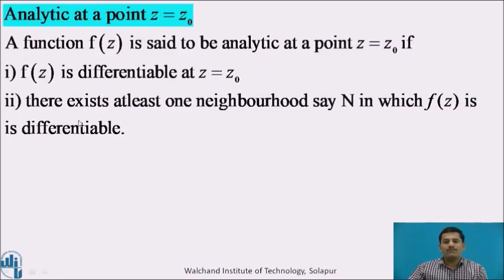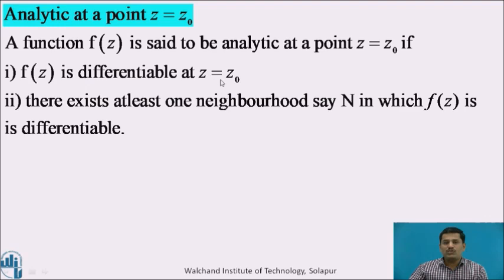Next, the definition of an analytic function. First, analytic at a point: a function f of z is said to be analytic at a point z equal to z0 if it satisfies two conditions. The first condition is f of z is differentiable at z equal to z0, and the second condition is that there exists at least one neighborhood around the point z0 in which f of z is differentiable.